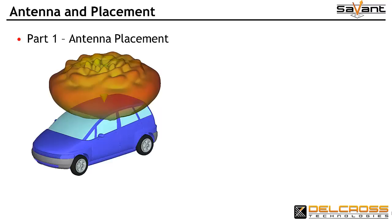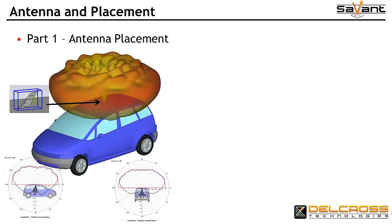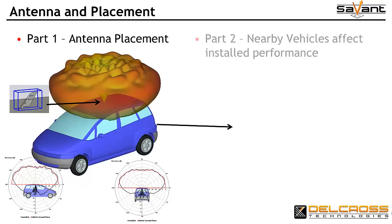In Part 1 of this video series, we used Savant to examine the installed performance of a blade antenna on our sedan. We found that the single-element omnidirectional coverage was best achieved by mounting it on the center of the top of the passenger compartment.